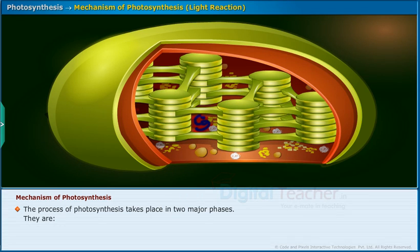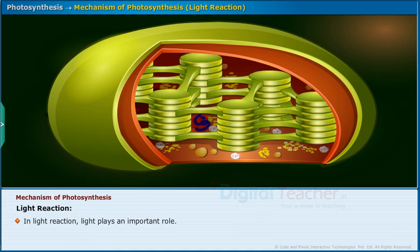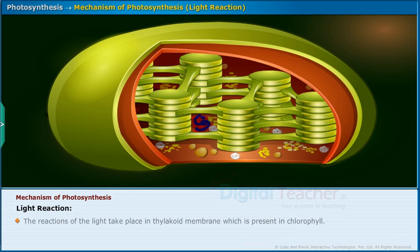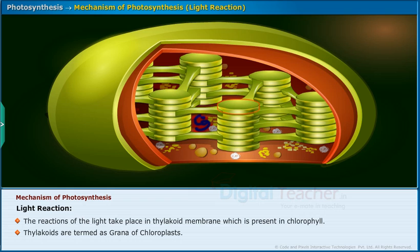Photosynthesis takes place in two major phases: light reaction and dark reaction. In light reaction, light plays an important role. A series of chemical reactions takes place one after another, initiated by light. Hence, this phase is technically termed as the photochemical phase. The reactions of the light reaction take place in the thylakoid membrane, which is present in chlorophyll. Thylakoids are termed as the grana of chloroplasts.